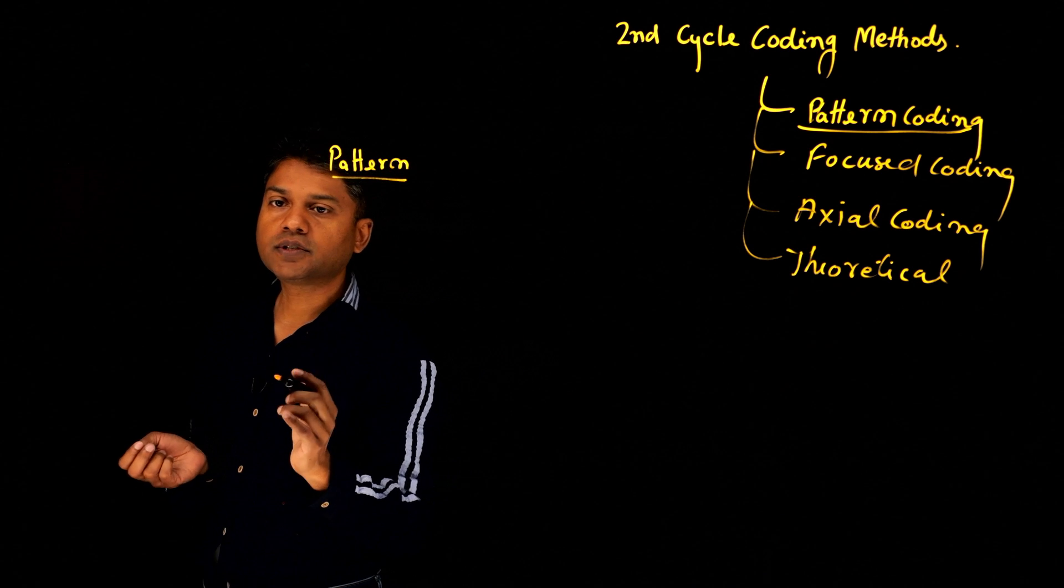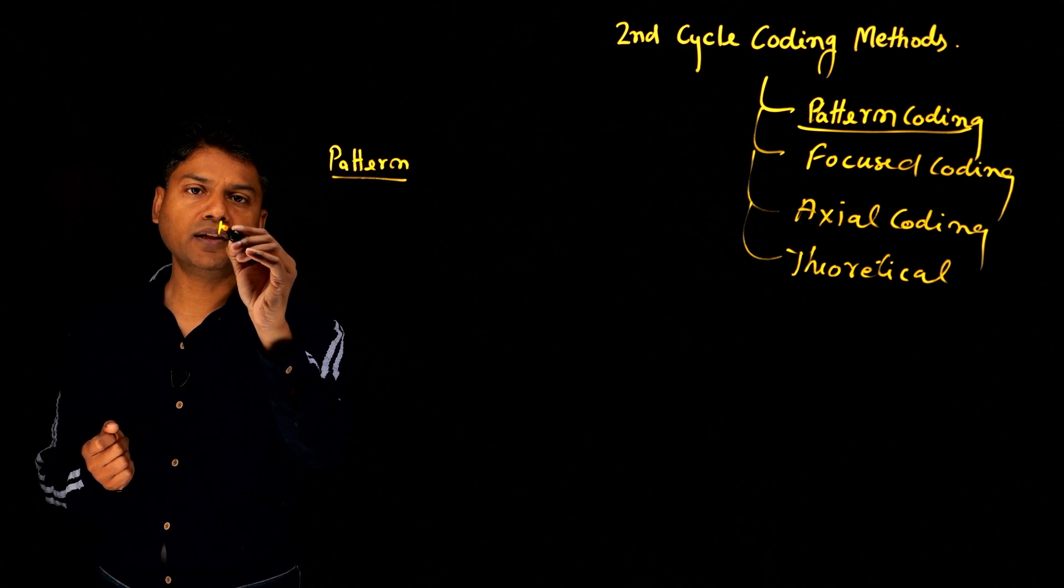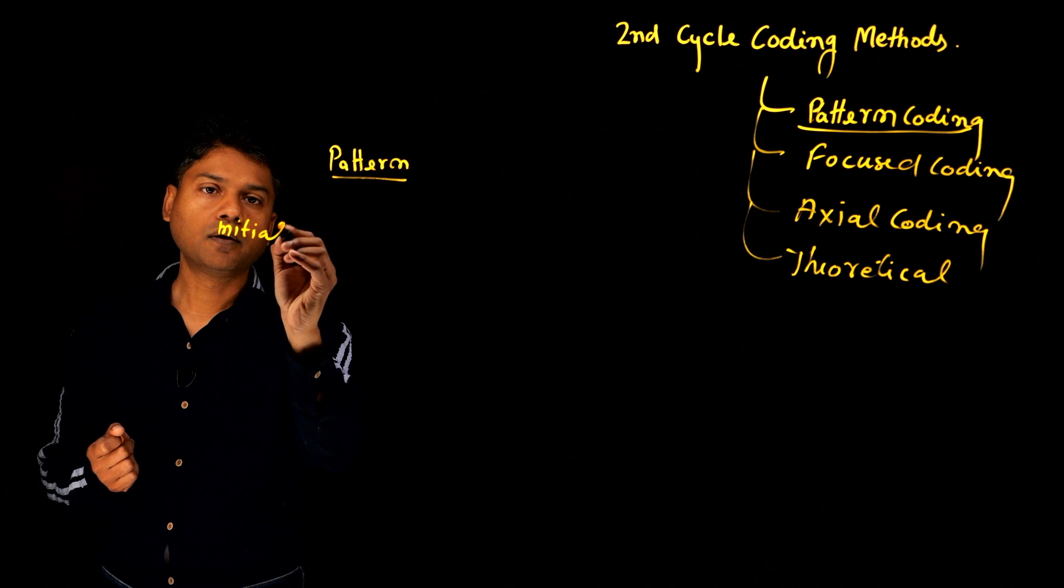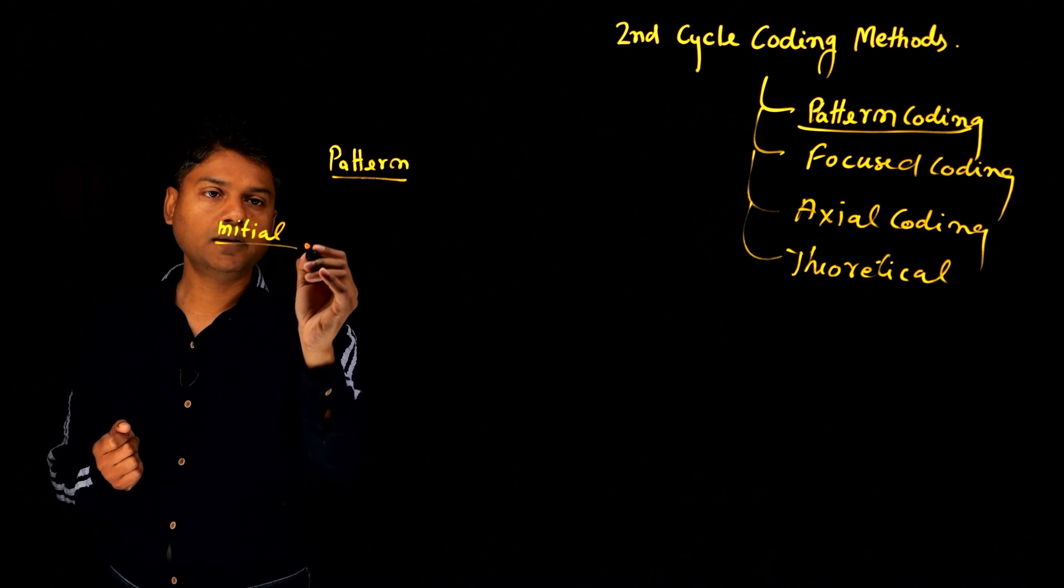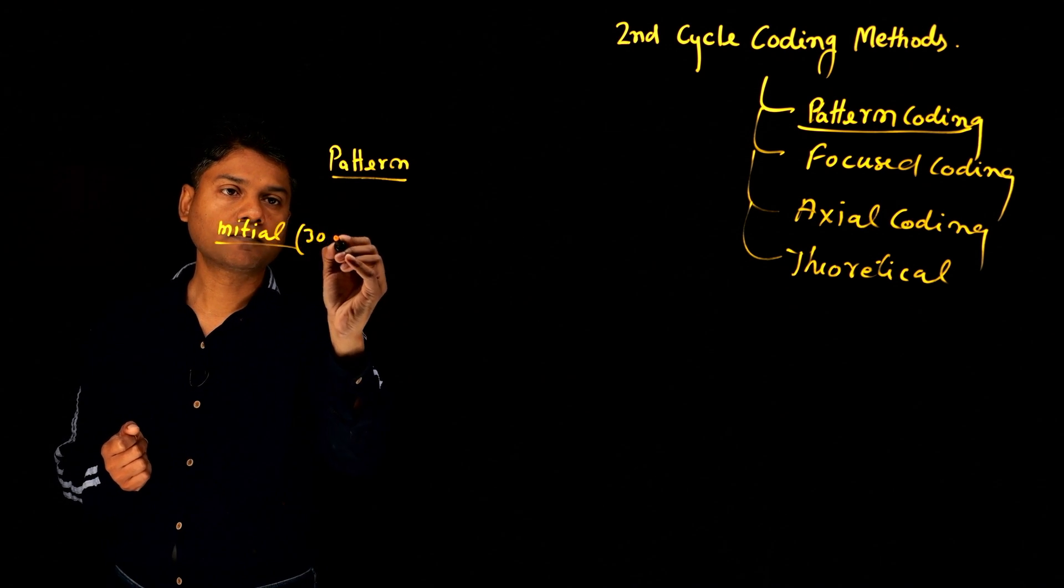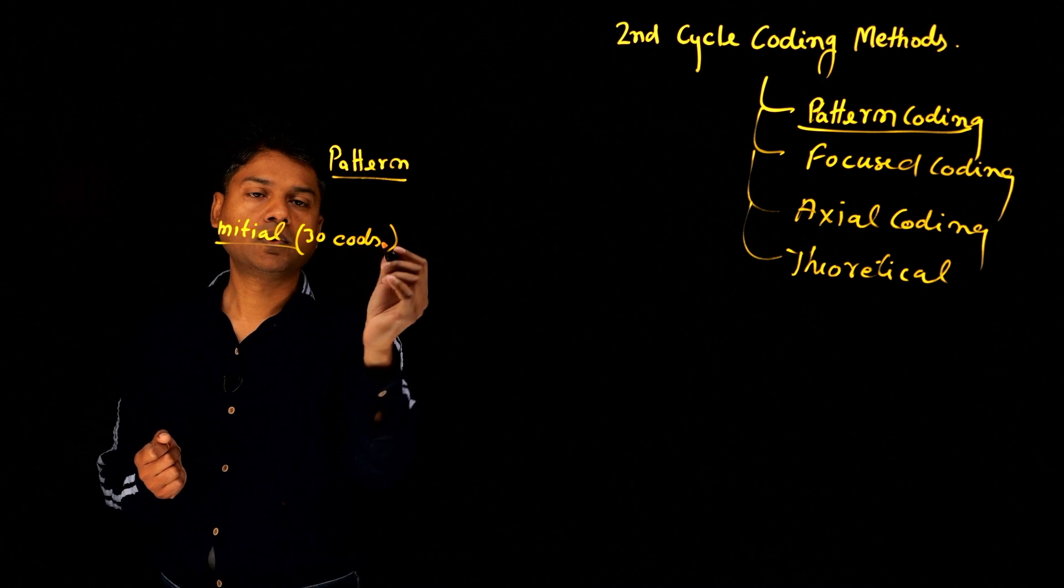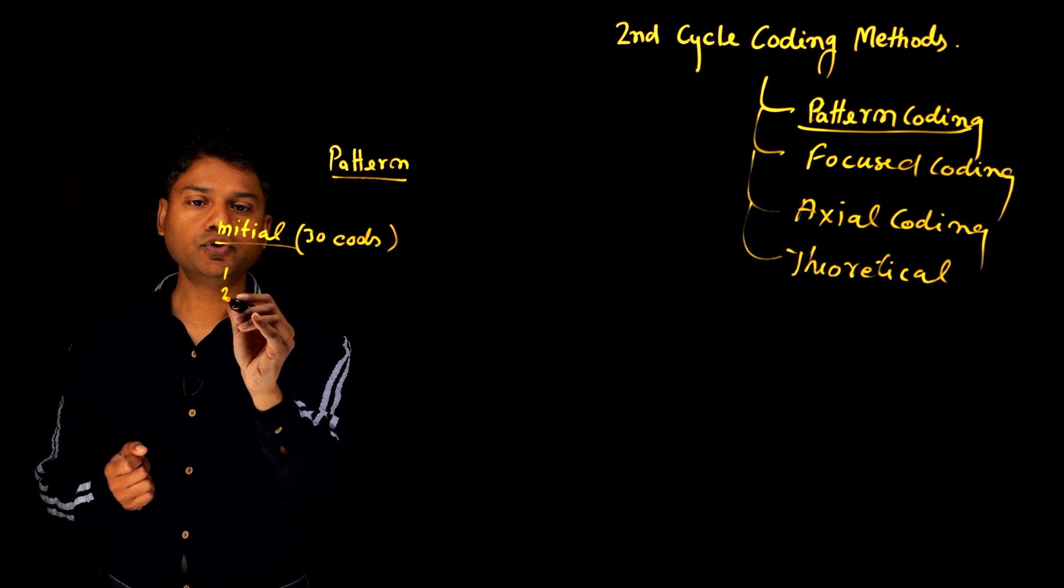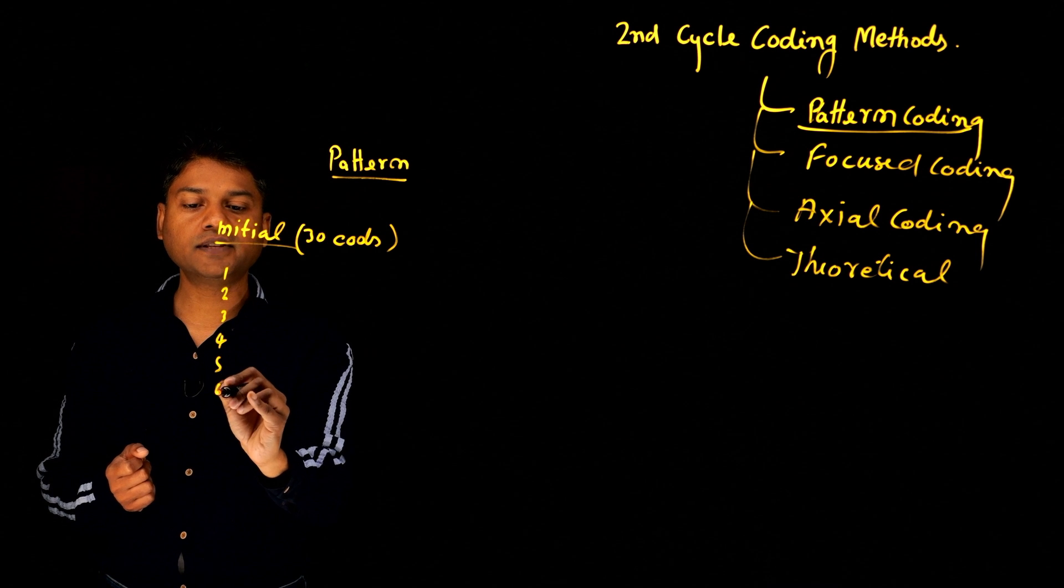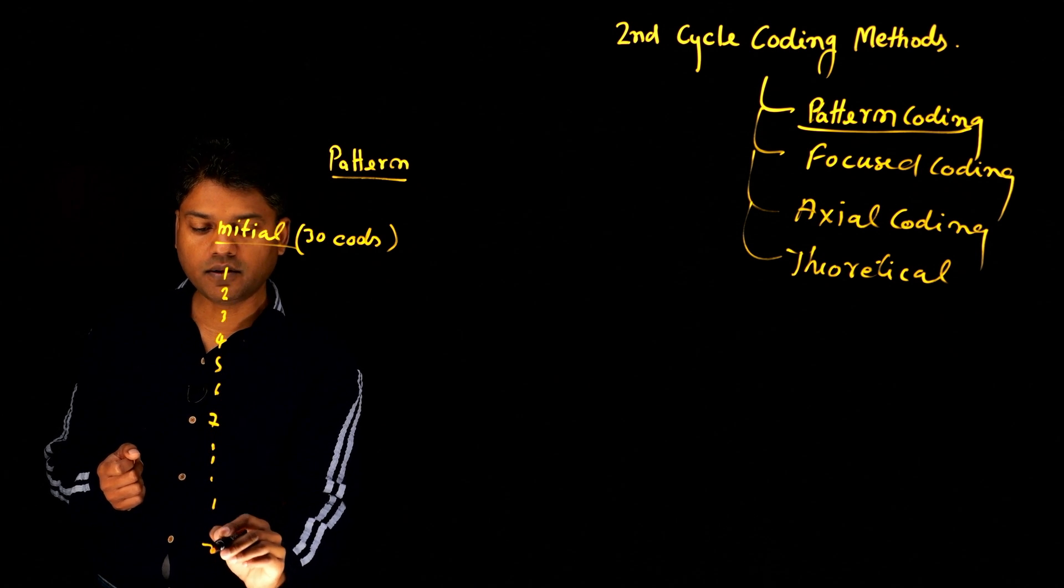So let's say that in the first cycle of coding, initial coding, you got, let's say 30 codes. For example, code 1, 2, 3, 4, 5, 6, 7, and let's say 30 codes.